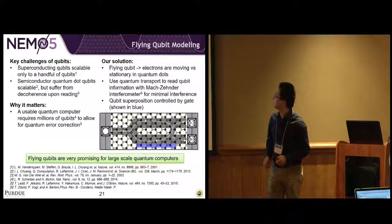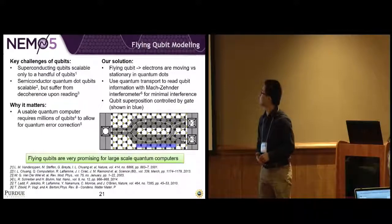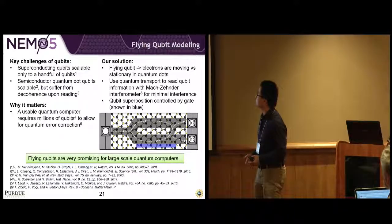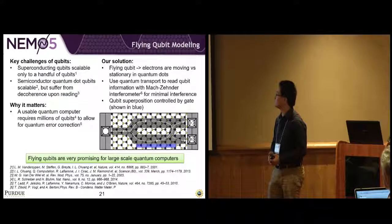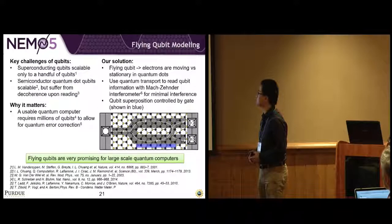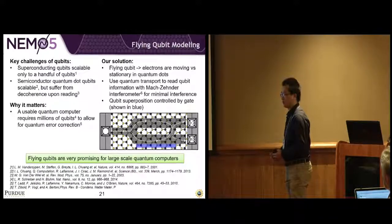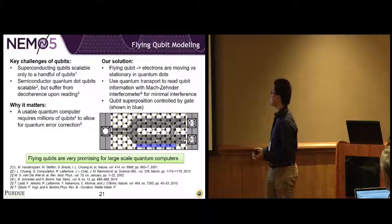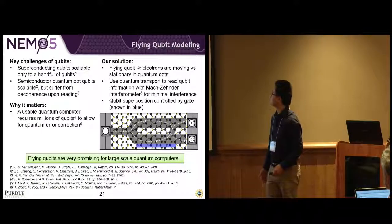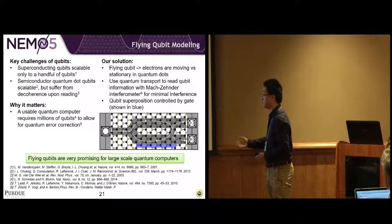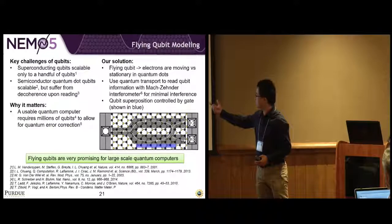The last is flying qubit modeling. The key challenge is there are two different types of qubits. One is superconducting qubits that are scalable to only a handful of qubits. The other type is semiconductor quantum dots. They are scalable, but they suffer from decoherence upon reading. In order to have a really usable quantum computer, we need millions of qubits to allow for quantum error correction. Our solution is we are simulating flying qubits. Flying means that the electrons are moving from left to right versus stationary in quantum dots. We use quantum transport to read out the qubit information for minimum interference, and the quantum superposition is controlled by the gate.